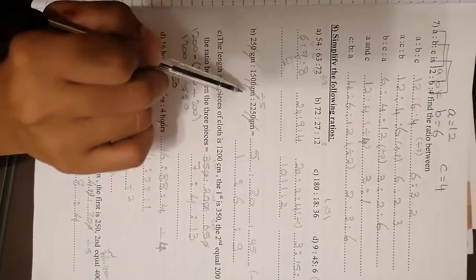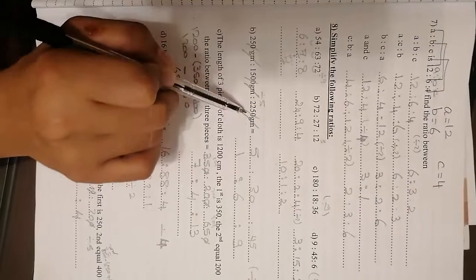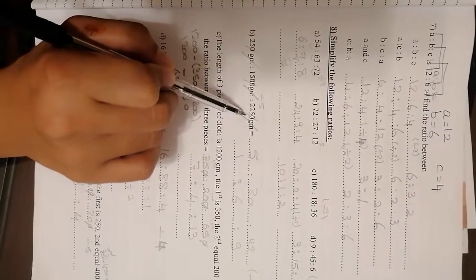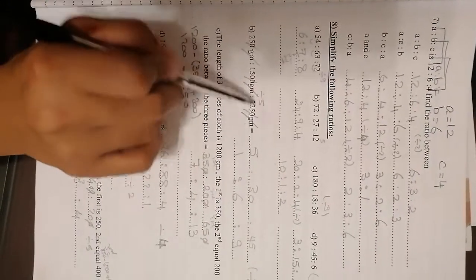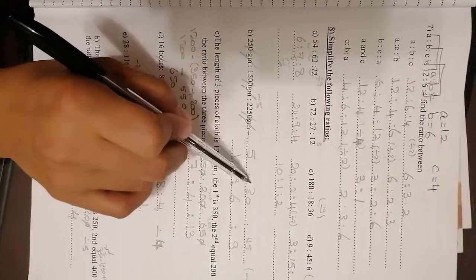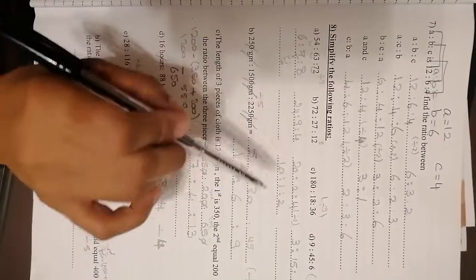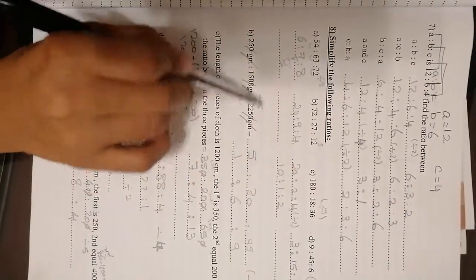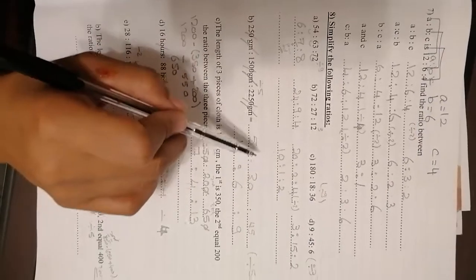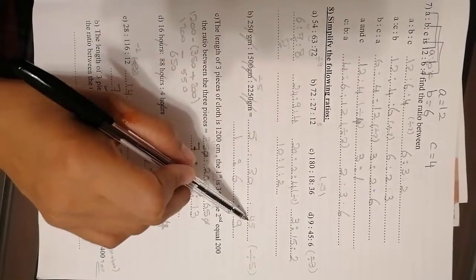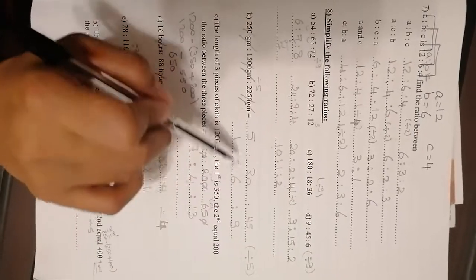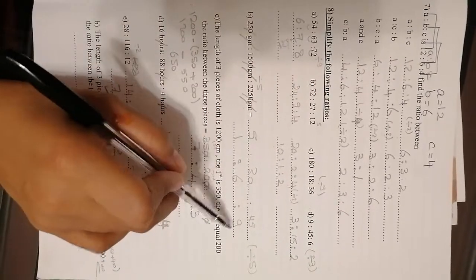Here I have 250 grams, 1,500 grams, 2,250 grams. First of all, you are going to cross the grams because in ratio I do not write any units. All of them in table 5, so it will be 5 to 30 to 45. Again, you can make it divided by 5. It will be 1 to 6 to 9.